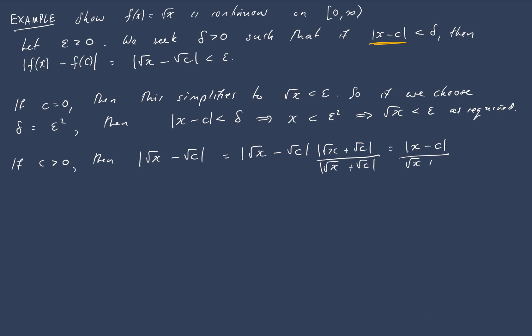Because root x and root c are both positive, and now the key thing is, because x is positive, that is less than or equal to the absolute value of x minus c over root c. And we've taken away the x dependence from the denominator there.